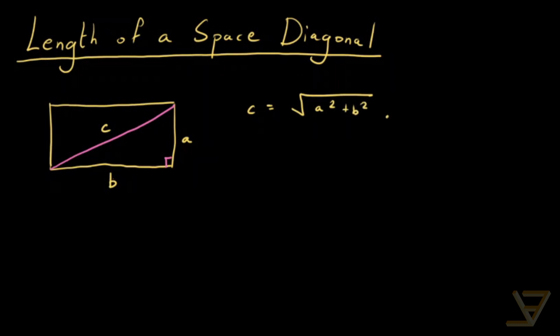And we can ask the natural question which extends from this, about what happens to a rectangular prism. So let's say we have a rectangular prism like this one.